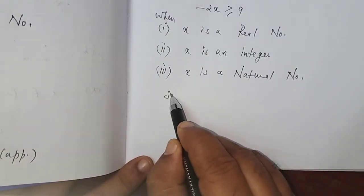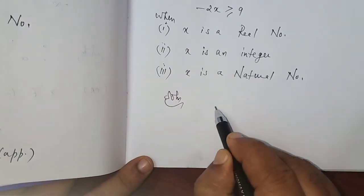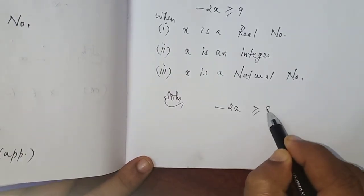Here is the question: -2x greater than or equal to 9, given.